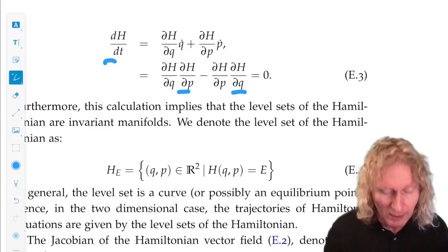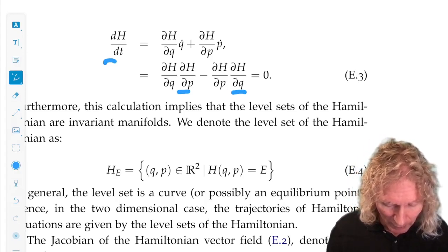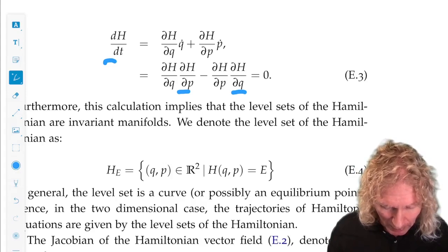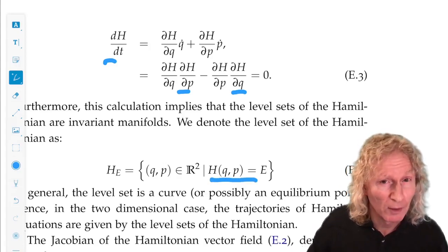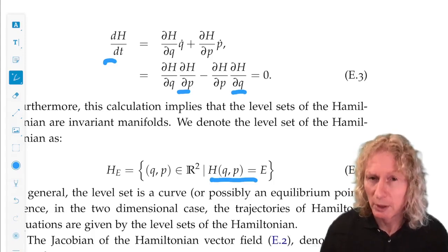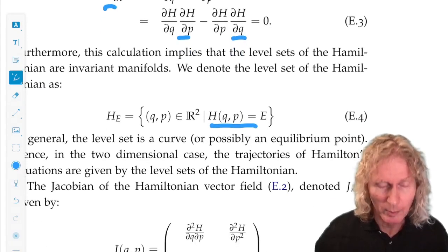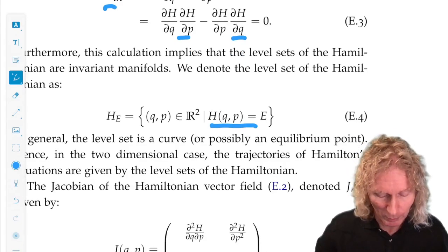This implies that the level set of the Hamiltonian function, the set of points in the phase space so that H equals a constant, generally is constant in time. It's an invariant set. Generally, it's a one-dimensional curve. It could degenerate to a fixed point, or you could view it as a curve containing a fixed point, and I'll give examples of that in a bit.